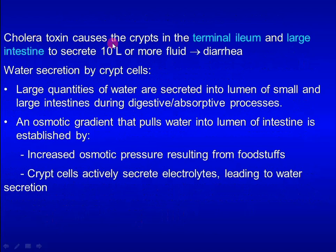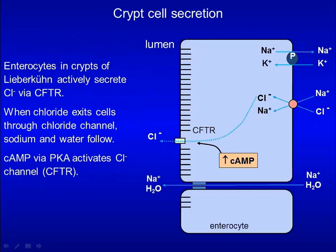Cholera toxin causes crypt cells in the terminal ileum and large intestine to secrete 10 liters or more of fluid, leading to diarrhea. Large quantities of water are secreted into the lumen of the small and large intestines during normal digestive and absorptive processes. This can be driven by increased osmotic pressure in the lumen due to the presence of food, or crypt cells actively secrete electrolytes leading to water secretion. Enterocytes within crypts of Lieberkühn actively secrete chloride through CFTR, and when chloride exits, sodium and water follow.